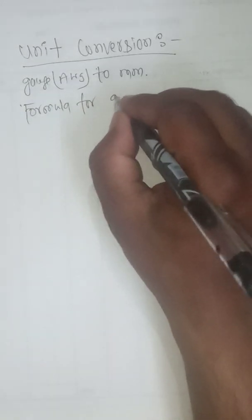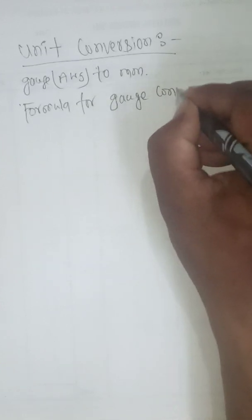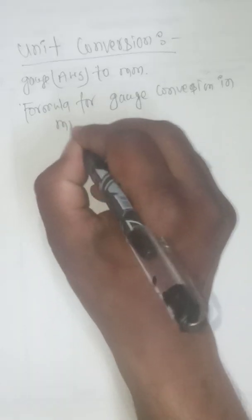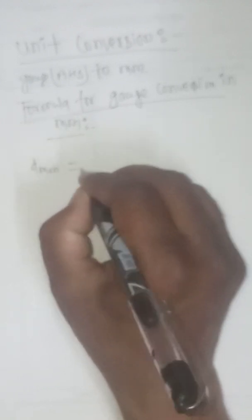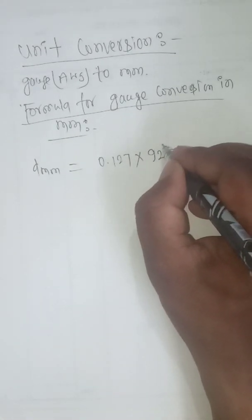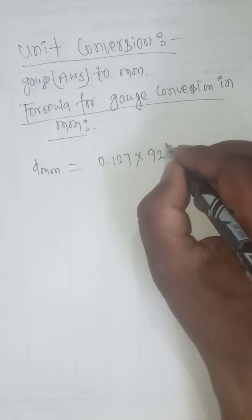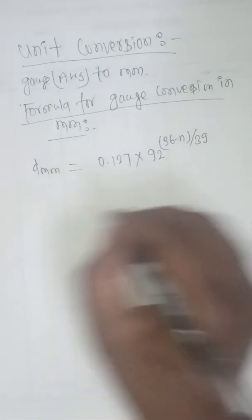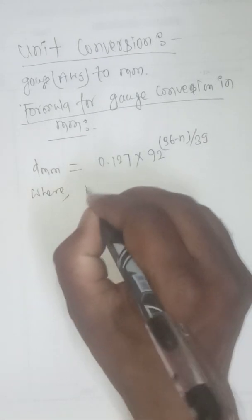Formula for conversion to mm... d_mm to find... the formula with power 26 minus n by 29, where n is gauge.